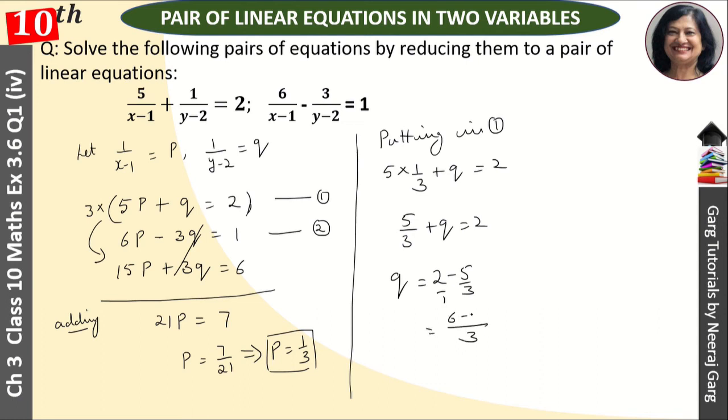This becomes 6 minus 5, and q is equal to 1 upon 3. Now from p and q, we will find the values of x and y.